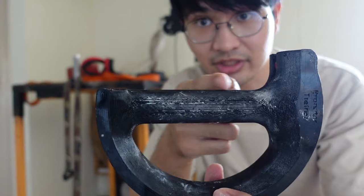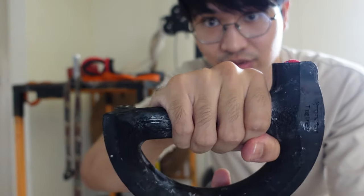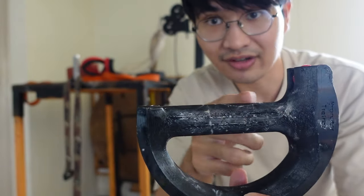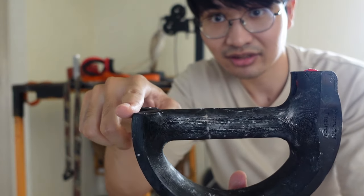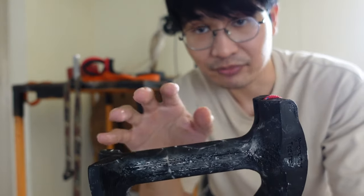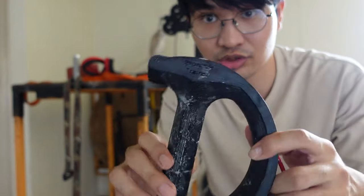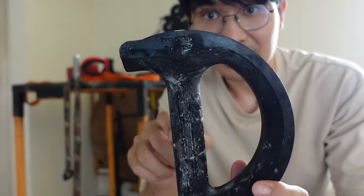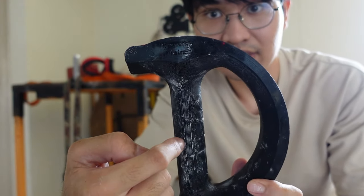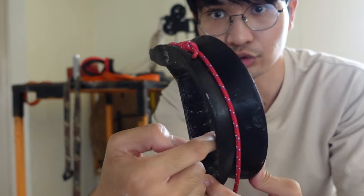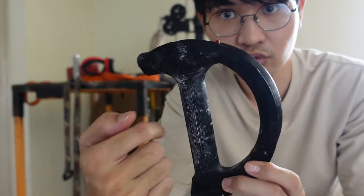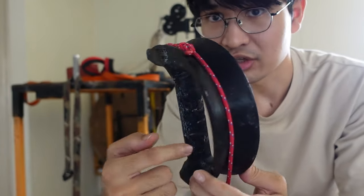So from here to here, the handle where you can actually grip on, it's about five inches. And then the entire length from end to end is about seven inches or so. And then the radius, which is from the middle here to the groove where the rope runs through, that is roughly 3.5 inches.